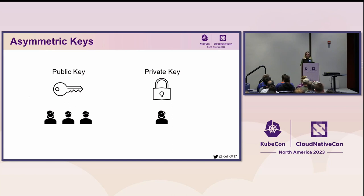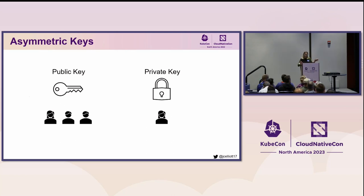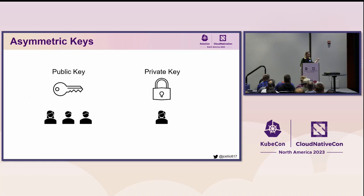Another type of encryption is asymmetric encryption. Instead of having the same key as with symmetric encryption, you have a cryptographic key pair. One key is the public key — broadly distributed to all entities that wish to send an encrypted message to the holder of the private key. The private key should be securely maintained by an entity. It can decrypt data that's encrypted by the public key. Both keys are actually capable of encryption and decryption, but in this example the public key does the encrypting and the private key does the decrypting.